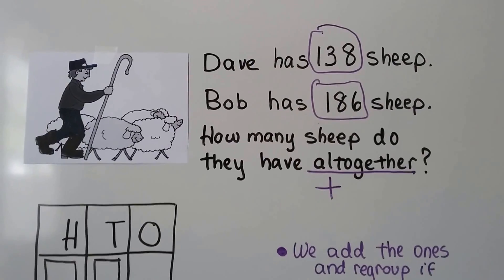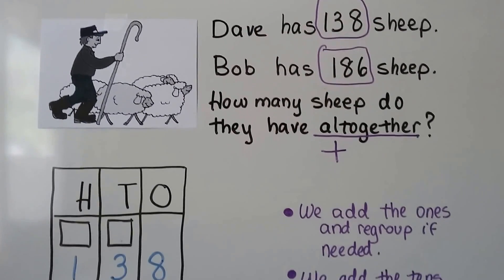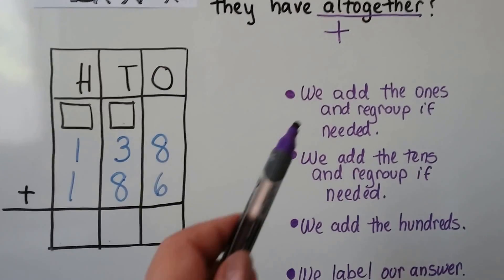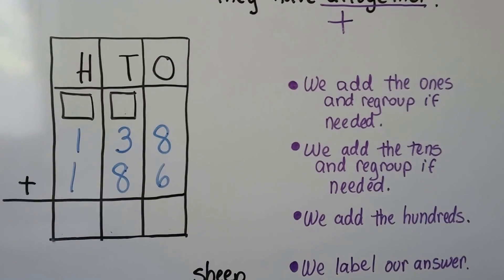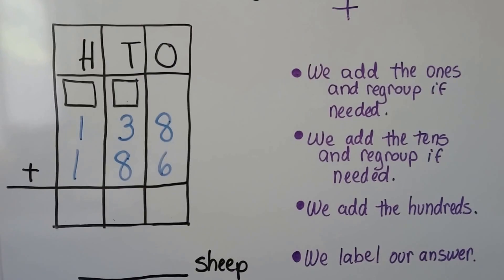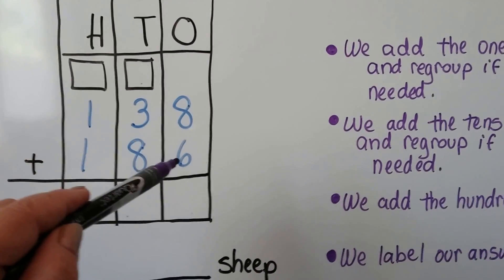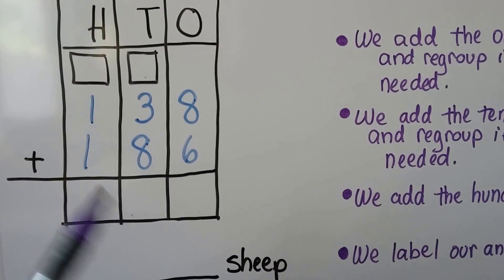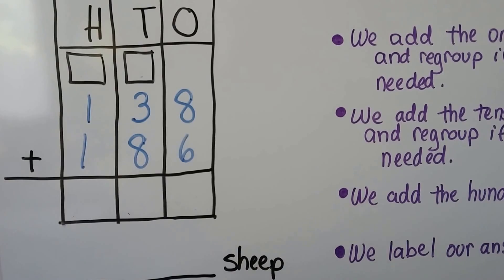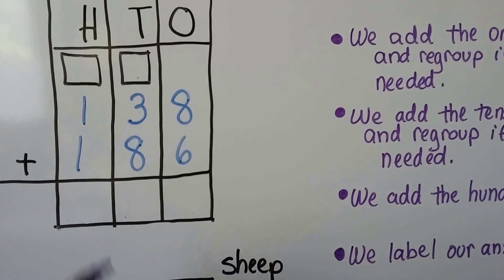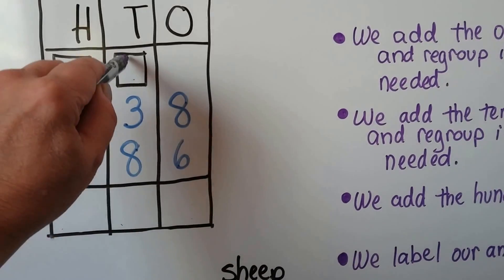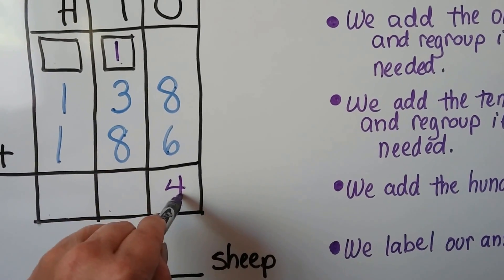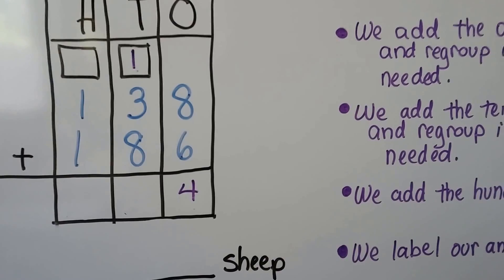We're going to add 138 plus 186. We add the ones and regroup if needed. We have 8 plus 6, that's 14. We regroup the 1 to the tens place and write the 4 from the 14 in the ones place.